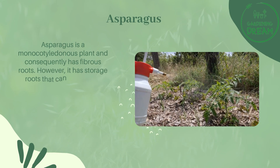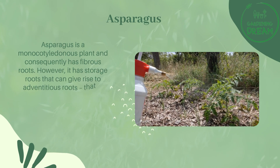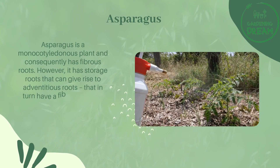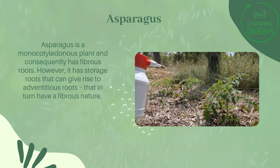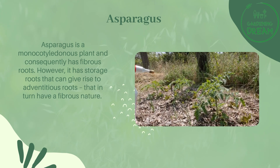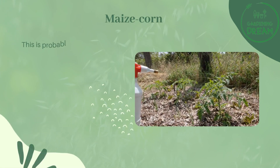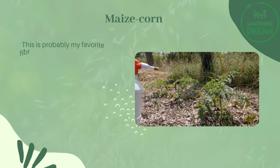Asparagus is a monocotyledonous plant and consequently has fibrous roots. However, it has storage roots that can give rise to adventitious roots, which in turn have a fibrous nature.